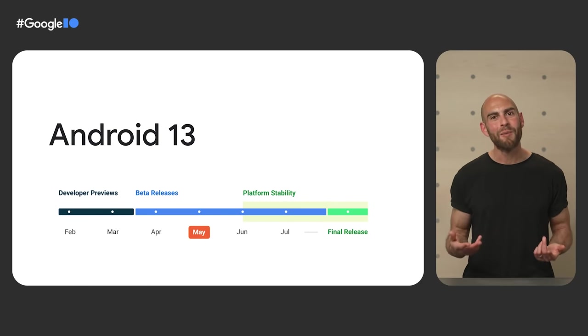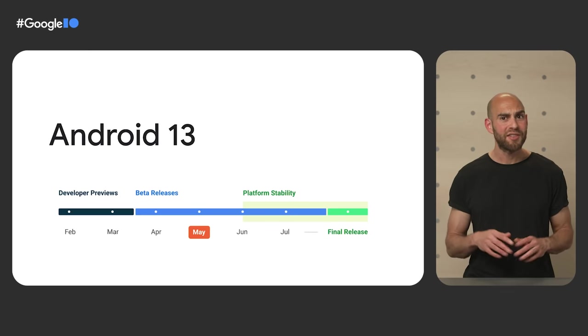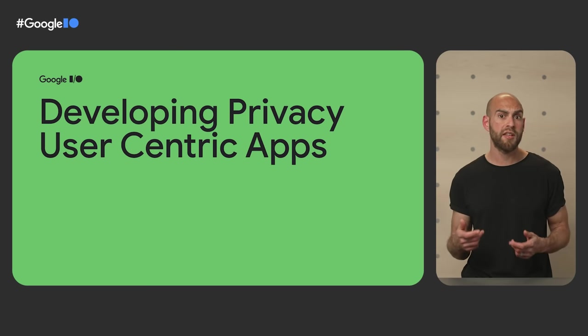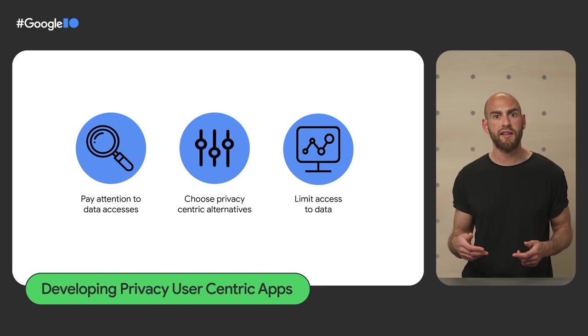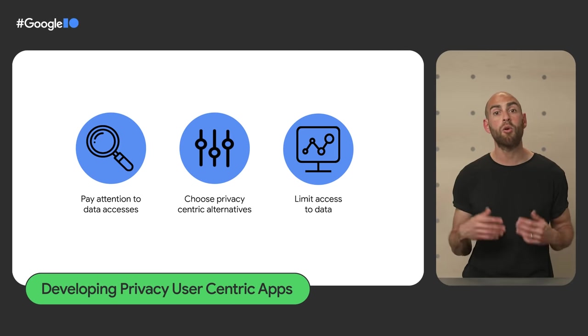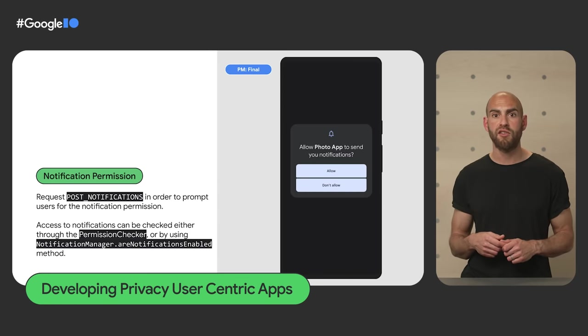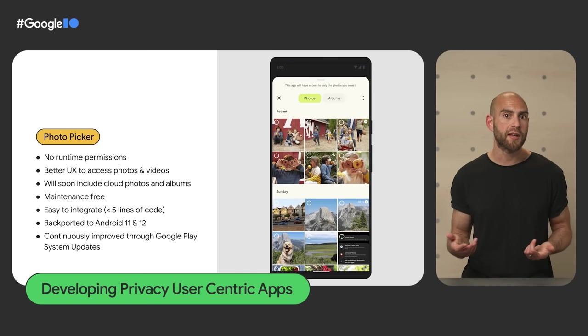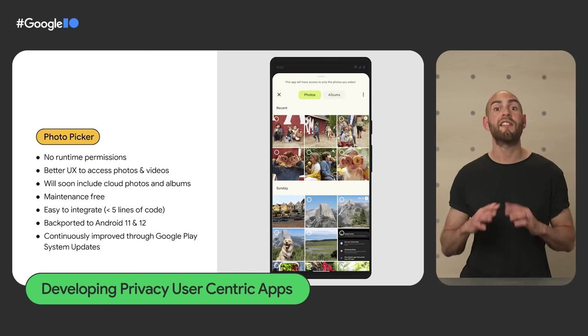Next up, Android 13. Android 13 Beta 2 is now available, evolving the platform to be more powerful, safe, and secure. In 'Developing Privacy User-Centric Apps,' we show how Android increasingly surfaces how apps access sensitive information and how you can minimize data access. Android 13 introduces a new permission for posting notifications and deprecates read external storage in favor of finer-grain permissions. It also brings a brand new photo picker, letting users select media files without granting your app access to their entire media library — no permissions needed at all.